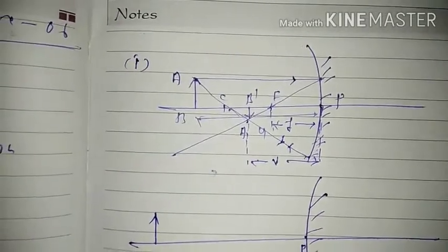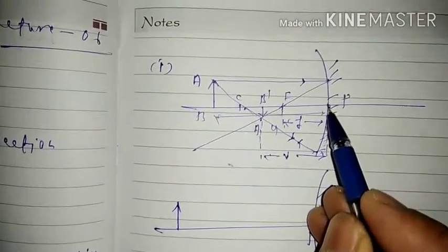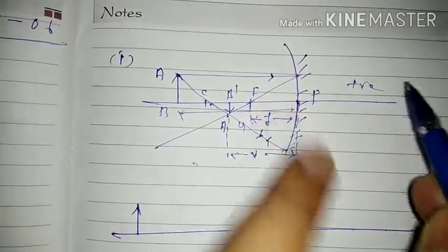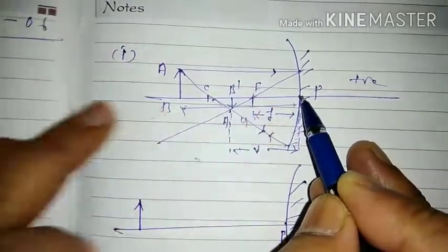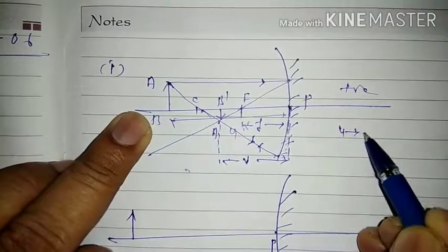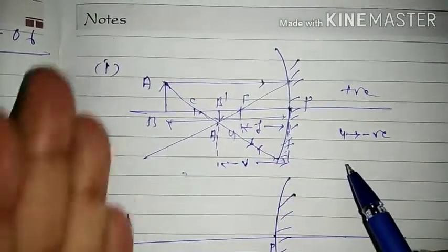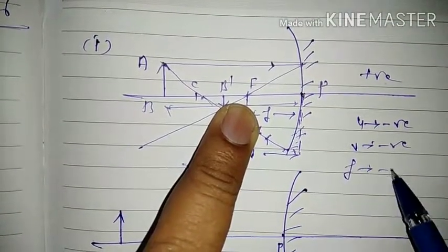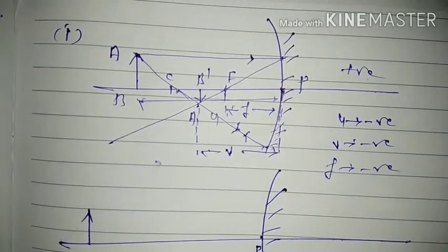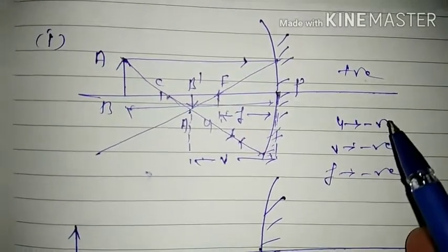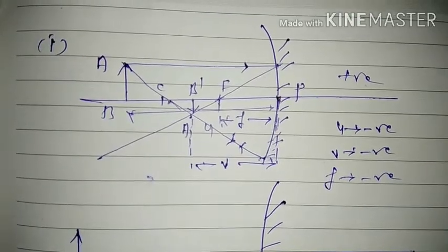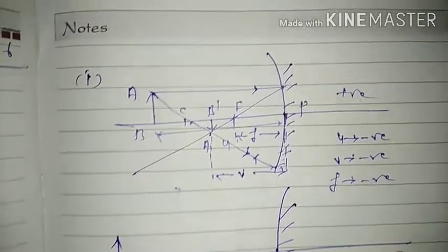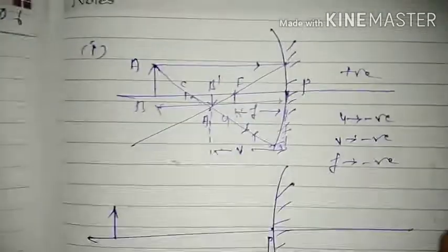The distance between the focus and the pole is called the focal length. According to the sign convention, all distances are measured from the pole. In this case the object is to the left of the pole so u is negative. The image is also to the left of the pole so v is negative. The focus is also to the left of the pole so the focal length f is also negative. If these were to the right of the pole, the values would be positive.